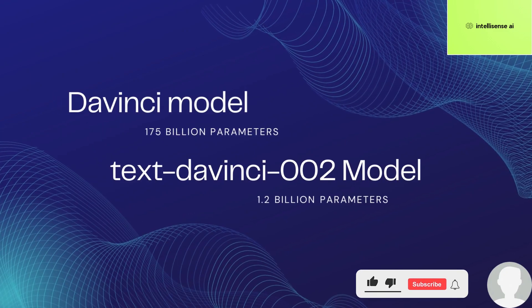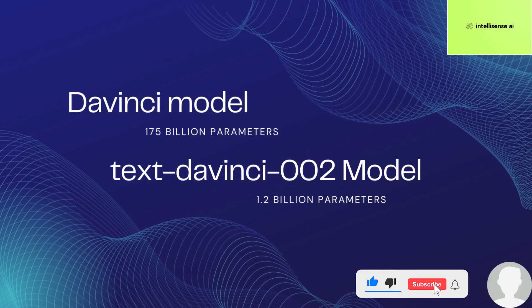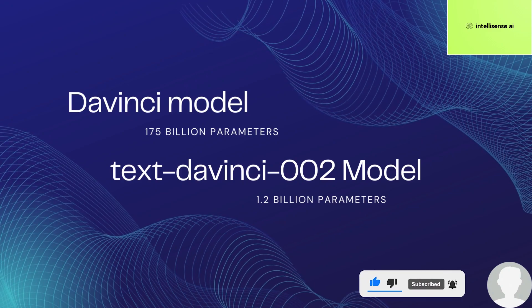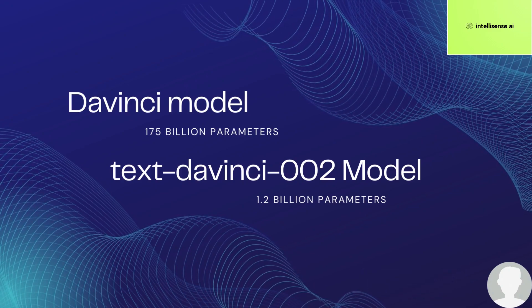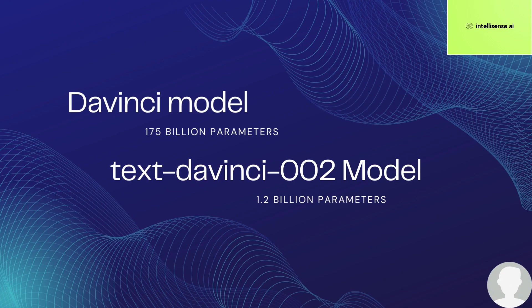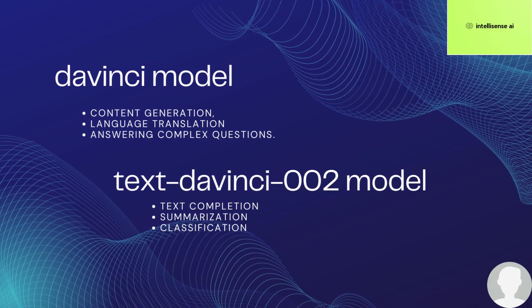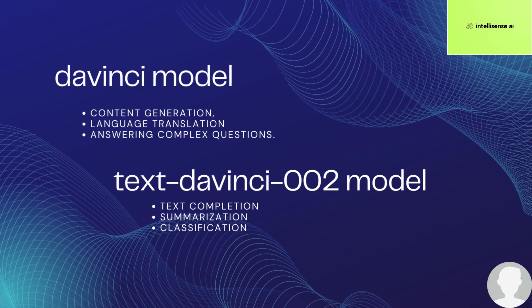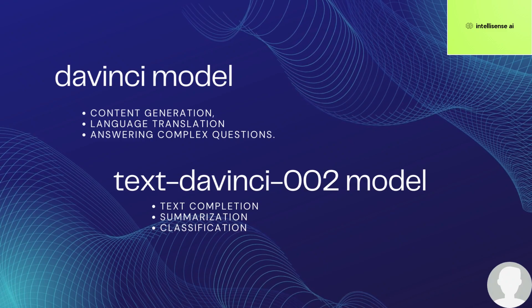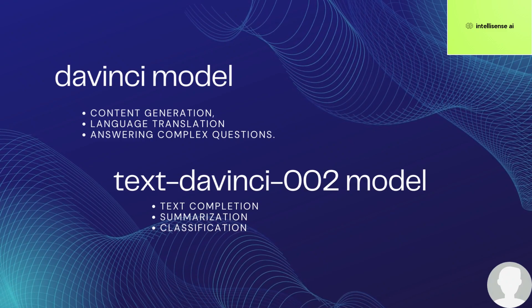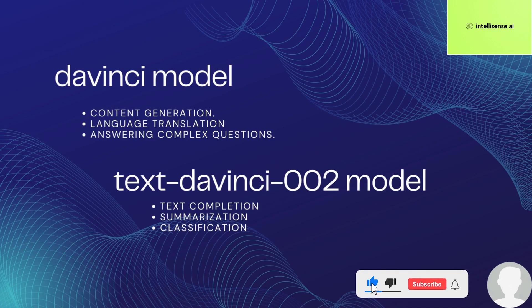Firstly, the Davinci model is much larger, with 175 billion parameters, compared to the text-davinci-002 model which has 1.2 billion parameters. Due to its size, the Davinci model is designed for more complex natural language processing tasks, such as content generation,